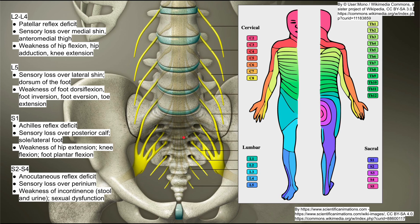S1 is the next radiculopathy. You'll have an Achilles reflex deficit — that's a smack in the back of the heel. The sensory loss for S1 is over the posterior calf and the sole and lateral foot, which matches the S1 color in the dermatome diagram, with some overlap on the posterior calf. You'll also have weakness of hip extension, knee flexion, and foot plantar flexion — kind of the opposite of the L2 to L4 weakness.